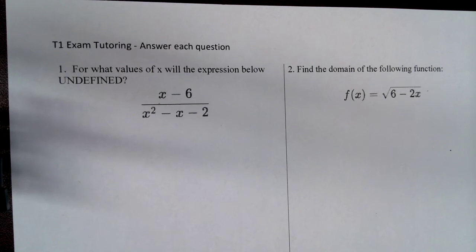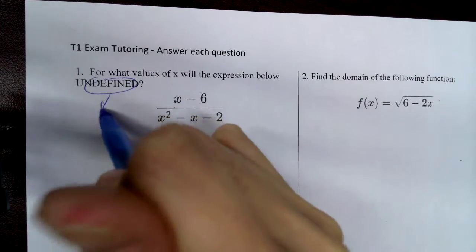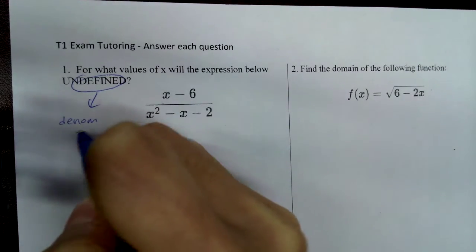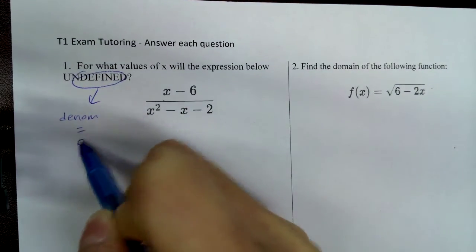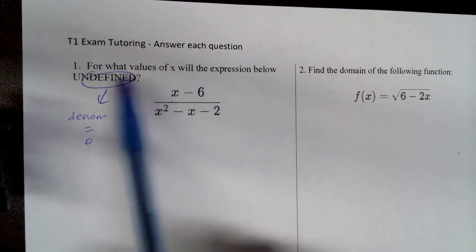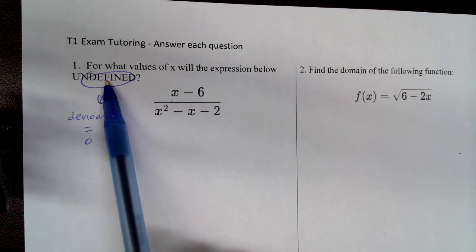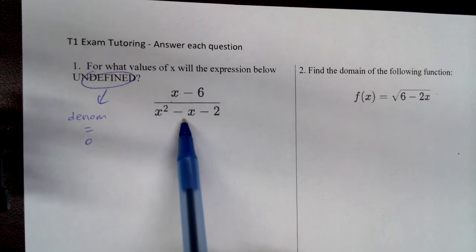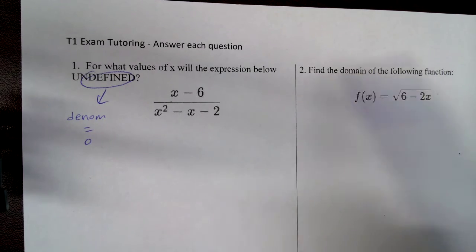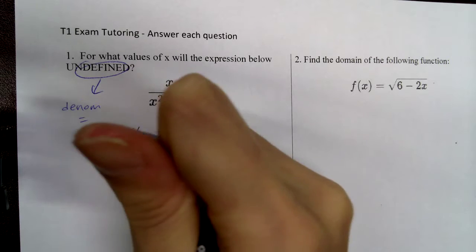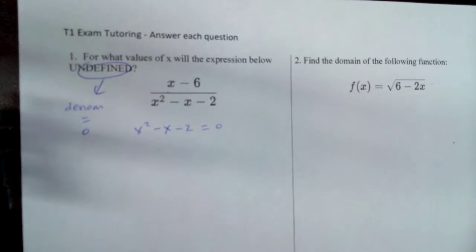Number one, for what values of x will the expression below be undefined? Undefined, we learned a long time ago, means when the denominator is equal to zero. We cannot have a zero in the denominator, and when we have zero in the denominator, we call that undefined. So this question is asking, what value of x is going to make the denominator equal to zero? So in order for us to find those values, we have to set the denominator equal to zero.